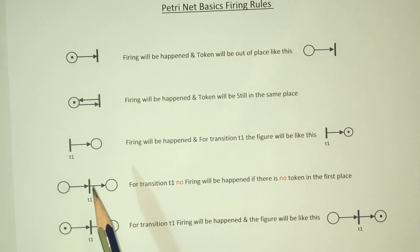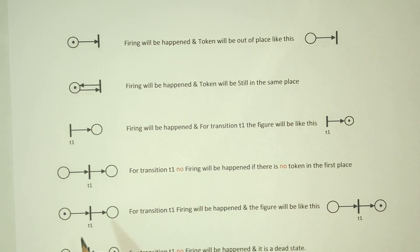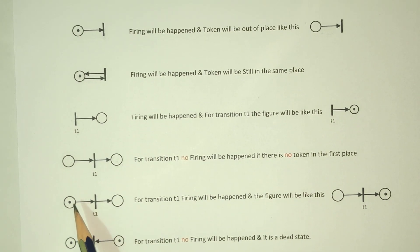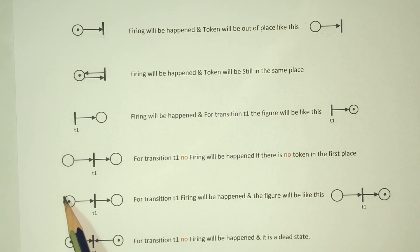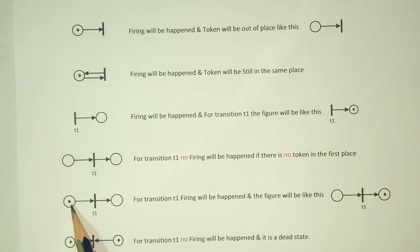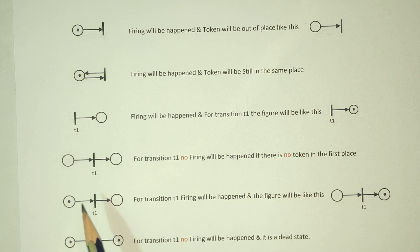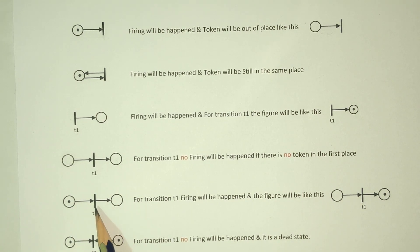Let's see how we can see this token. What is this token? This token is placed in place. If you place a token, then T1 is active. What is this token? This token will be left, and this token will be placed in place.